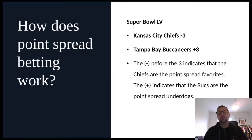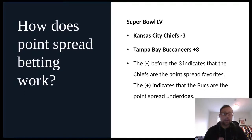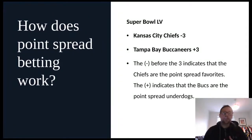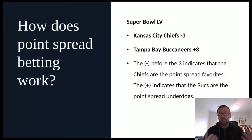Today is Super Bowl Sunday and Super Bowl 55 is going to be played in Tampa at Raymond James Stadium — the Chiefs taking on the Tampa Bay Buccaneers. Here I've got a real-time example from odds this morning from Bet365, where the Chiefs are minus three to win and the Bucks are plus three. Minus three indicates that the Chiefs are the point spread favorite, while plus three indicates that the Bucks are the underdogs.